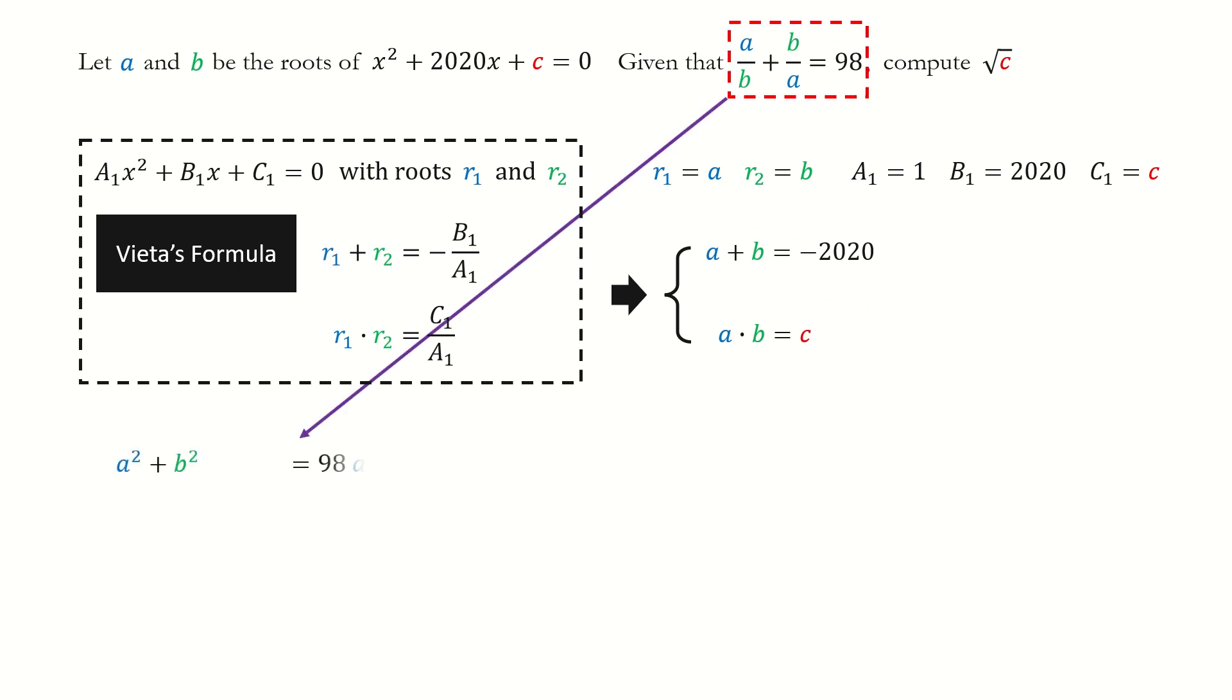First, we multiply ab on both sides, then we add this term on both sides.